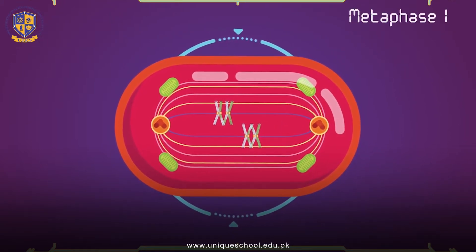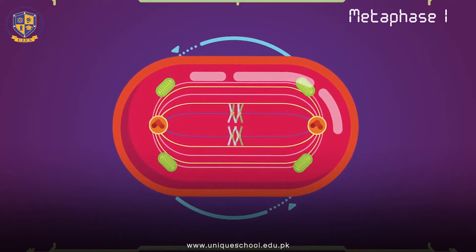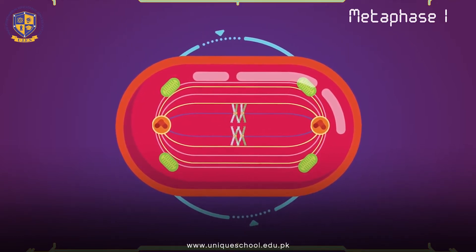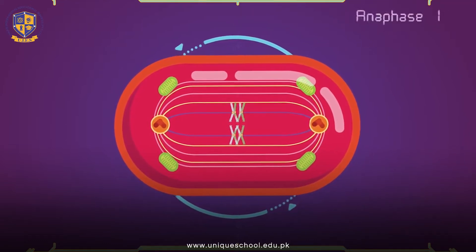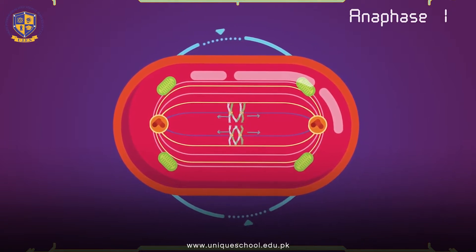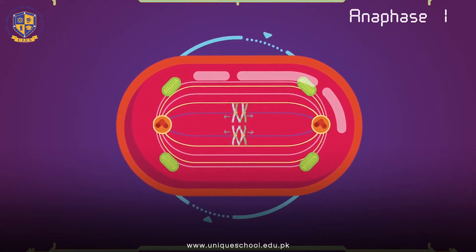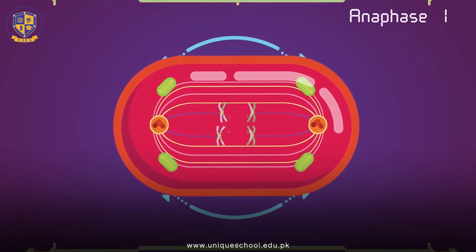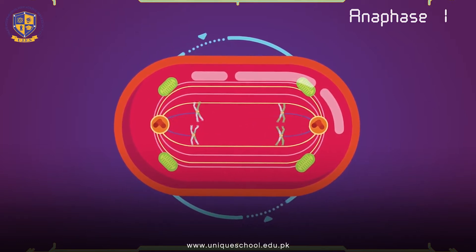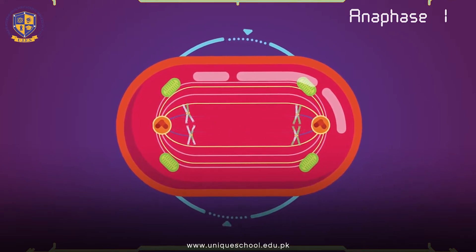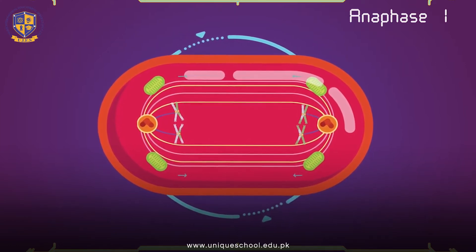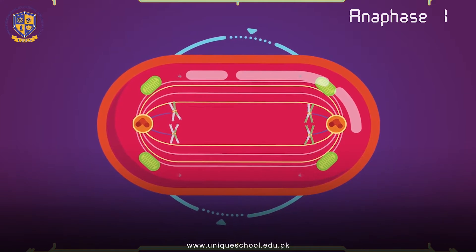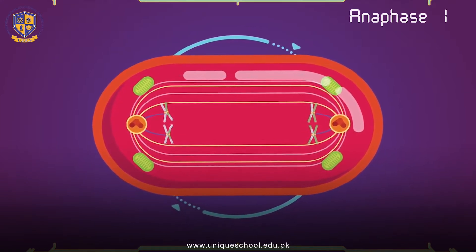Metaphase I: Homologous pairs move together along the metaphase plate. The paired homologous chromosomes align along an equatorial plane that bisects the spindle. Anaphase I: Kinetochore microtubules shorten, pulling homologous chromosomes — which consist of a pair of sister chromatids — to opposite poles. Non-kinetochore microtubules lengthen, pushing the centrosomes further apart. The cell elongates in preparation for division down the centre.